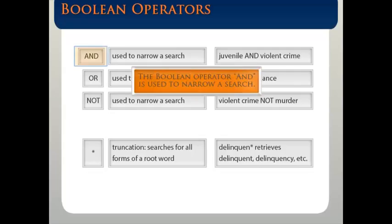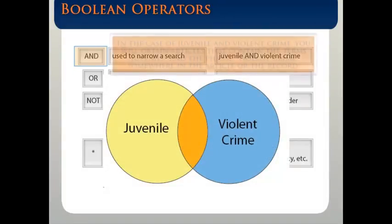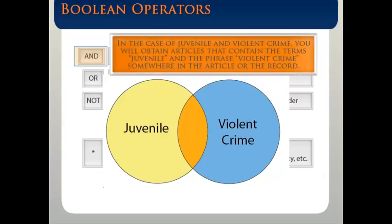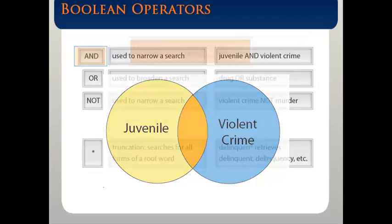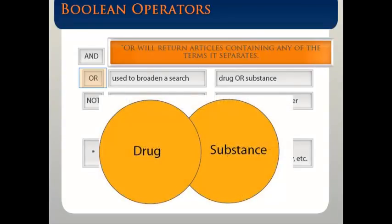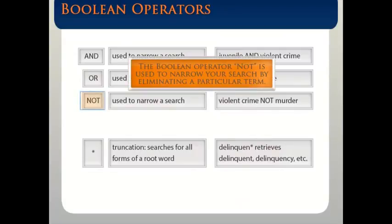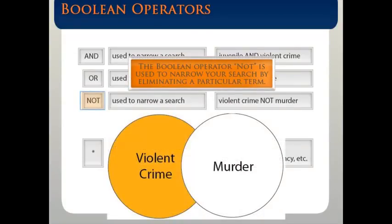The Boolean operator AND is used to narrow a search. It narrows your search by only giving you articles that contain all of the terms it separates. In the case of juvenile and violent crime, you will obtain articles that contain the term juvenile and the phrase violent crime somewhere in the article or the record. The Boolean operator OR is used to expand a search — OR will retrieve articles containing any of the terms it separates. By searching for drug or substance, you will get articles with either one of the terms present. The Boolean operator NOT is used to narrow your search by eliminating a particular term.